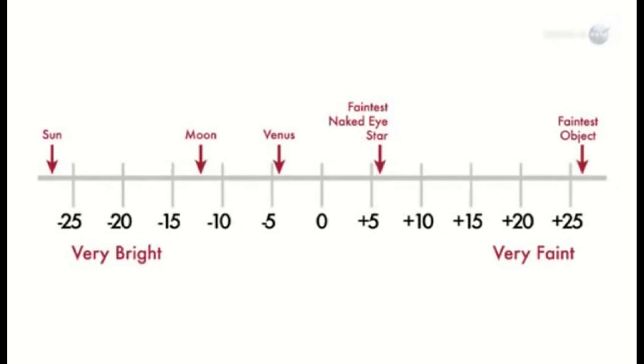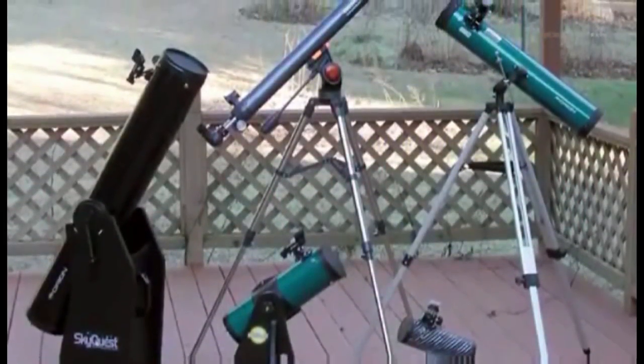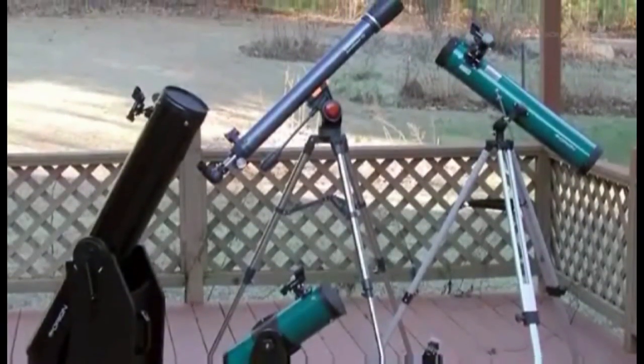During the hours around closest approach, the asteroid will brighten until it resembles a star of 8th magnitude. Theoretically, that's an easy target for backyard telescopes. The problem, points out Yeomans, is speed.